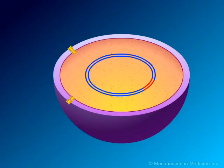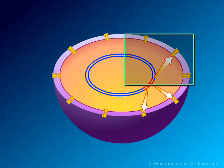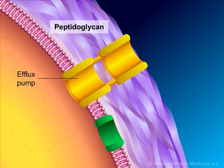A second mechanism of bacterial resistance to macrolide antibiotics is mediated by efflux pumps. These efflux pumps are encoded by the MEFA gene, which is a transposable element. Because they confer resistance to only macrolides and not lincosamides or streptogrammin B, they are referred to as the M phenotype. The efflux pumps are energy-dependent and, for S. pneumoniae, result in moderate levels of resistance.